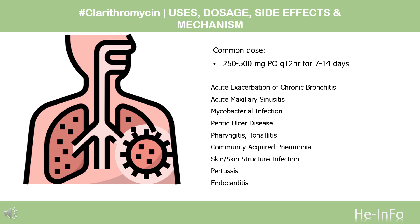For pertussis (off-label), used for treatment or post-exposure prophylaxis: 500 mg PO twice daily for 7 days. For bacterial endocarditis prophylaxis (off-label): 500 mg PO 30–60 minutes before the procedure.